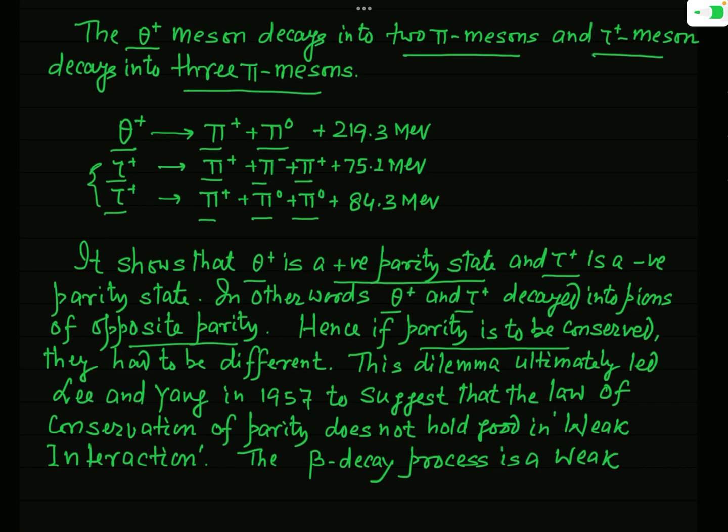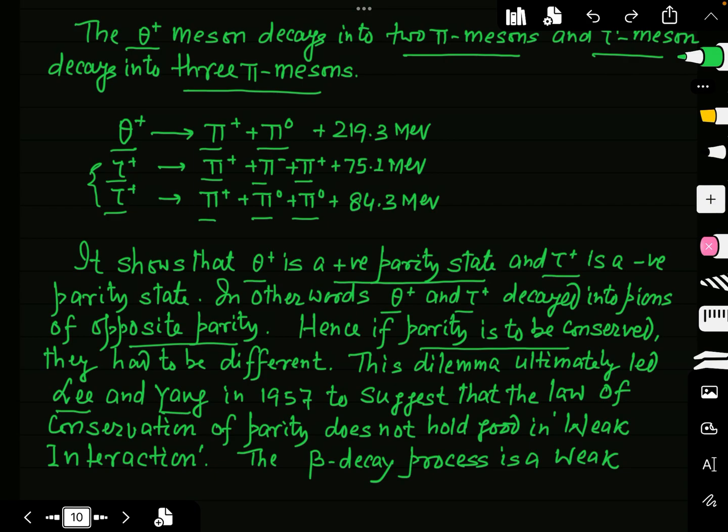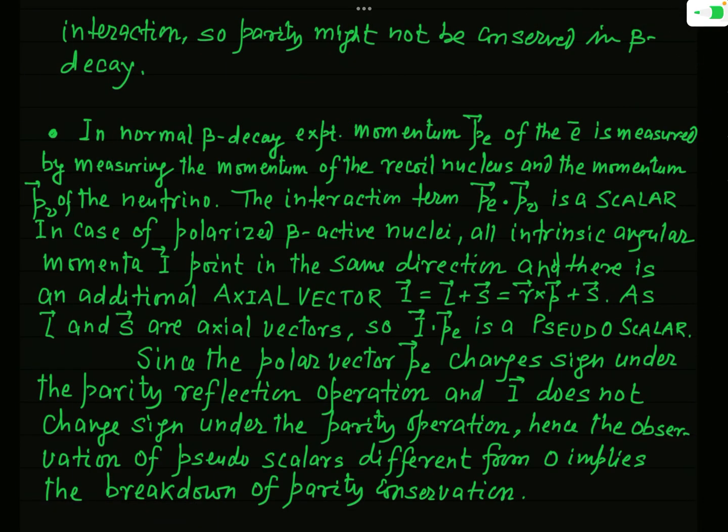Since these are weak processes, and beta decay is also a weak process, in 1957 two great scientists, Lee and Yang, claimed that parity will not remain conserved in any weak process. Beta decay is a very good example of a weak process, so according to Lee and Yang, parity will not remain conserved in beta decay. It should be noted that parity is conserved in strong and electromagnetic interactions, but not in weak interactions.